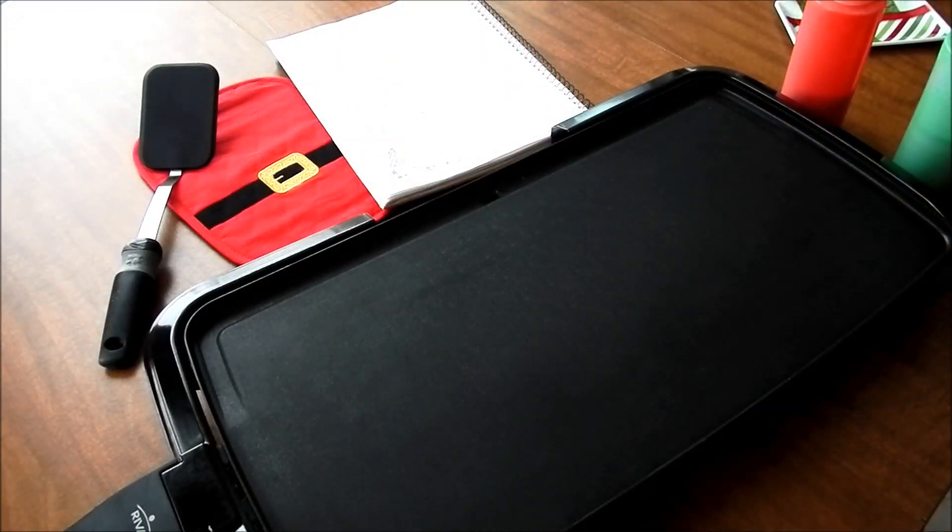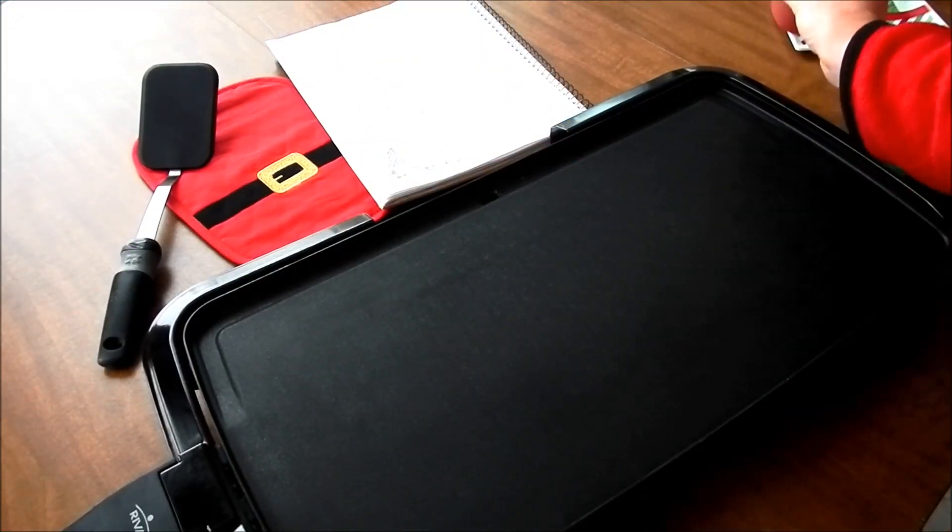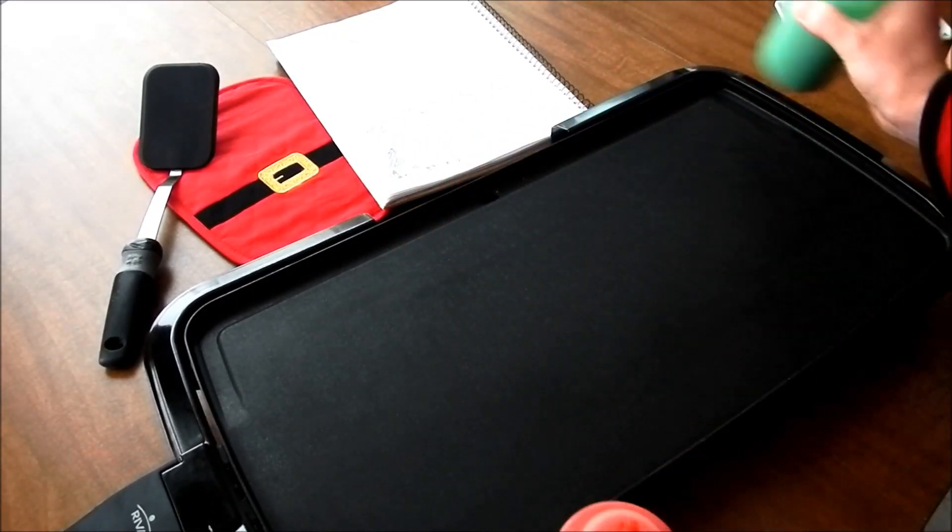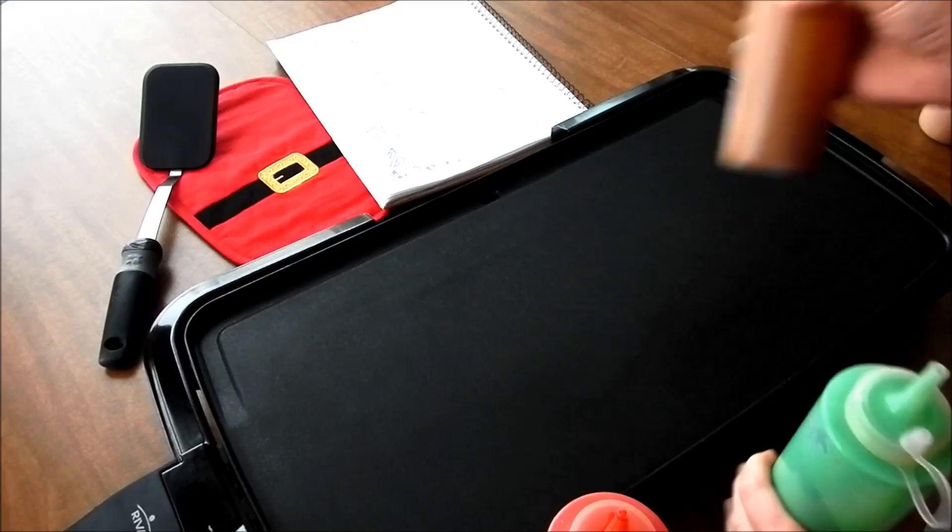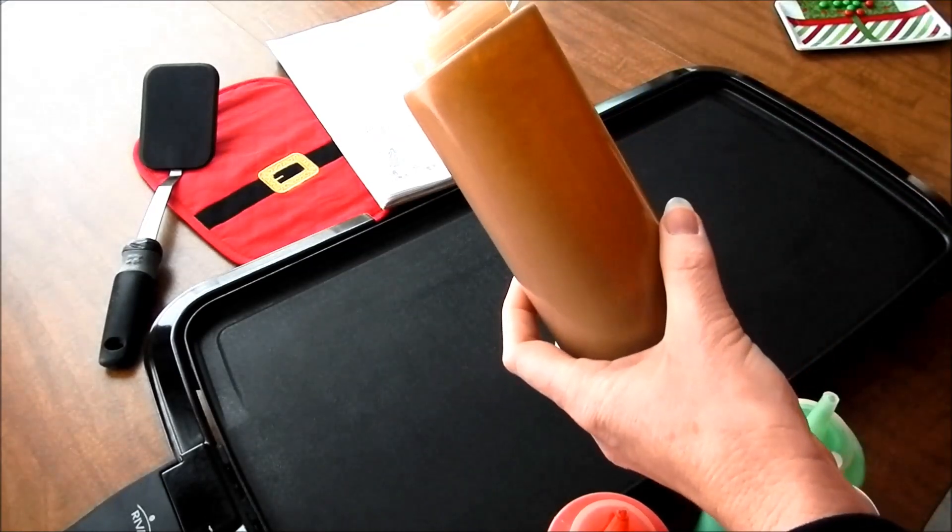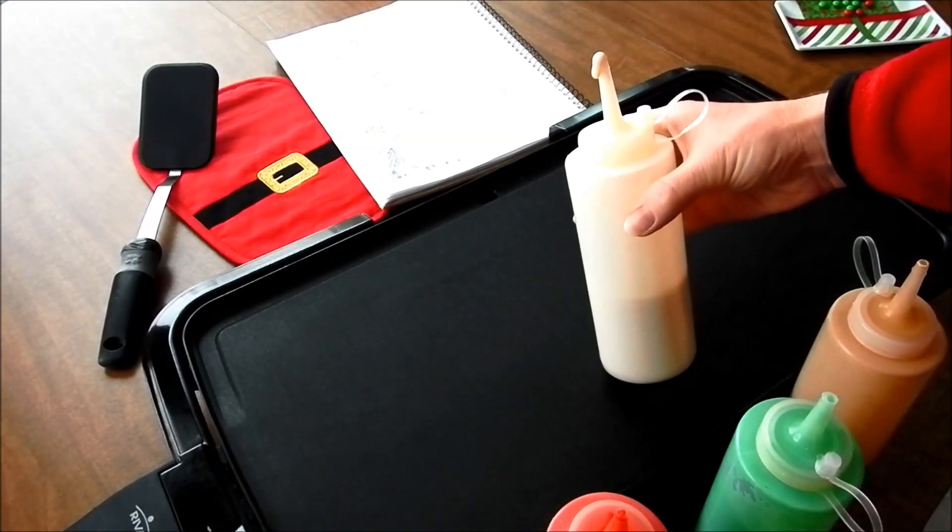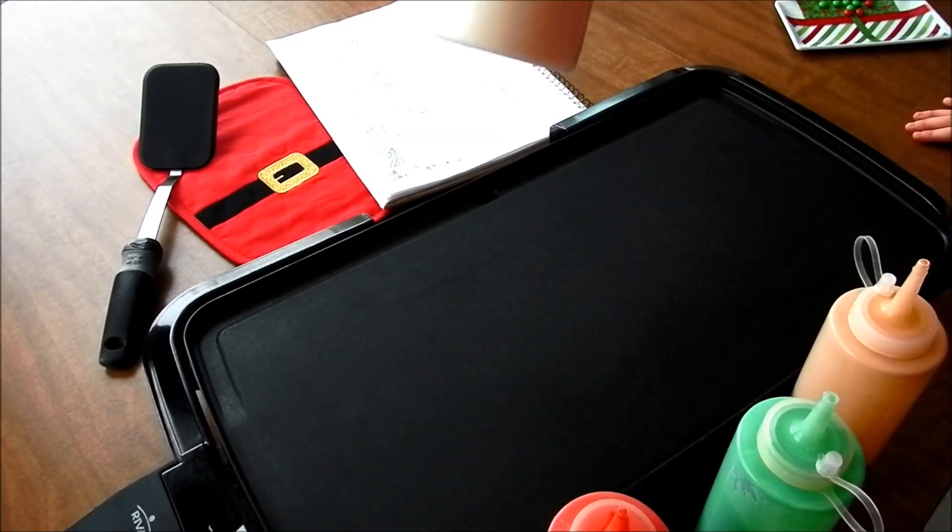Today we're going to make a stocking with a bear in it. We need red pancake batter, green, brown, light brown, and white.